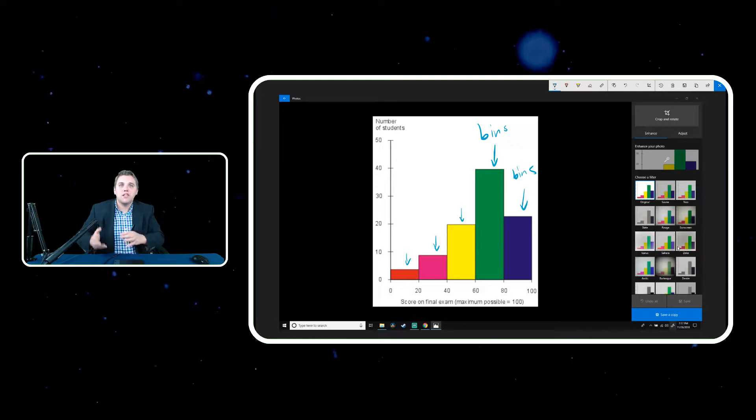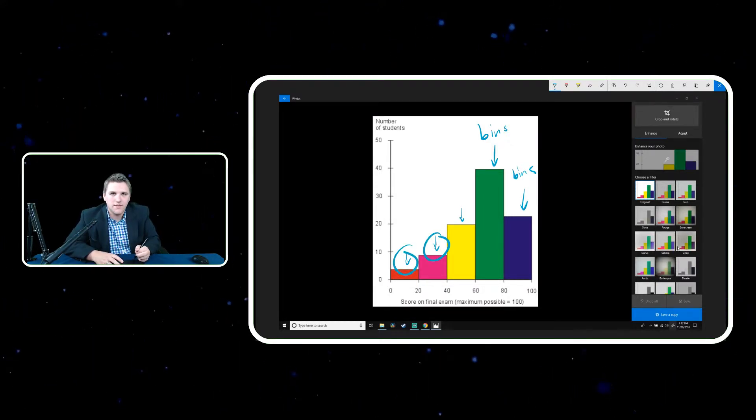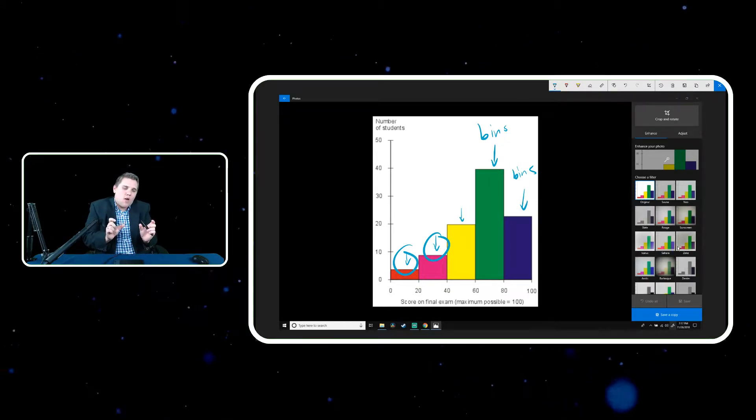Now, the idea is these bins are close together. In a sense, this bin right here is close to this bin. And so in a sense, that's why we have them touching.